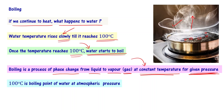At constant temperature for a given pressure — the boiling point of water at atmospheric pressure is 100 degrees centigrade.